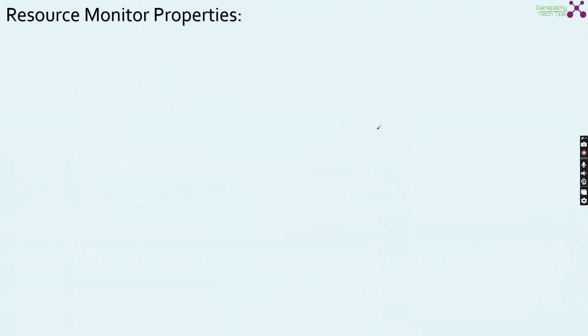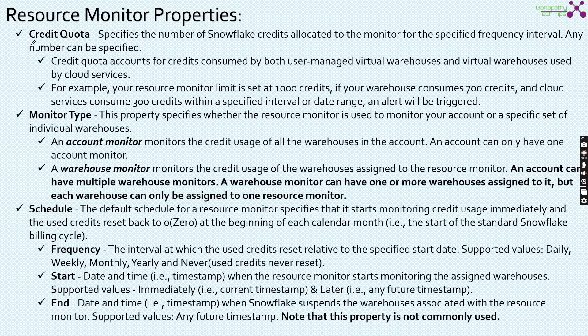Now we are going to look into Resource Monitor properties — what properties we can set at the Resource Monitor by which we can monitor the Snowflake usage. The first property is the credit quota, which specifies the number of Snowflake credits allocated to monitor a specific frequency interval. Any number can be specified. Credit quota accounts for credits consumed by both user-managed virtual warehouses and the virtual warehouse used by the cloud services layer. Snowflake credit consumption will be there for the cloud services layer as well.